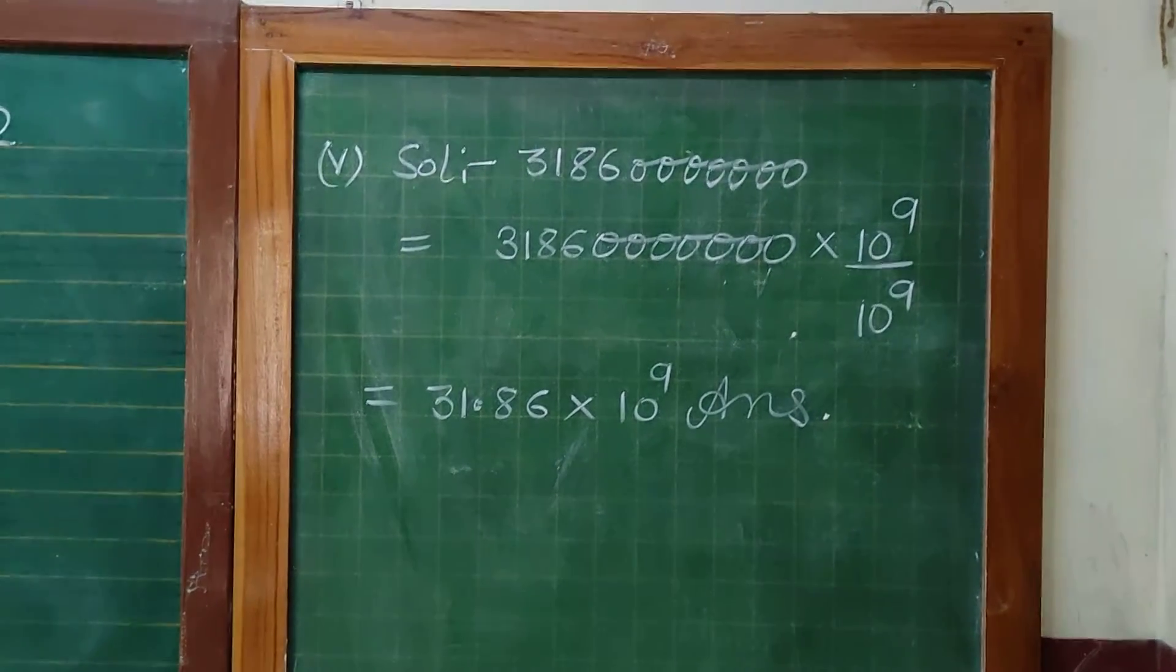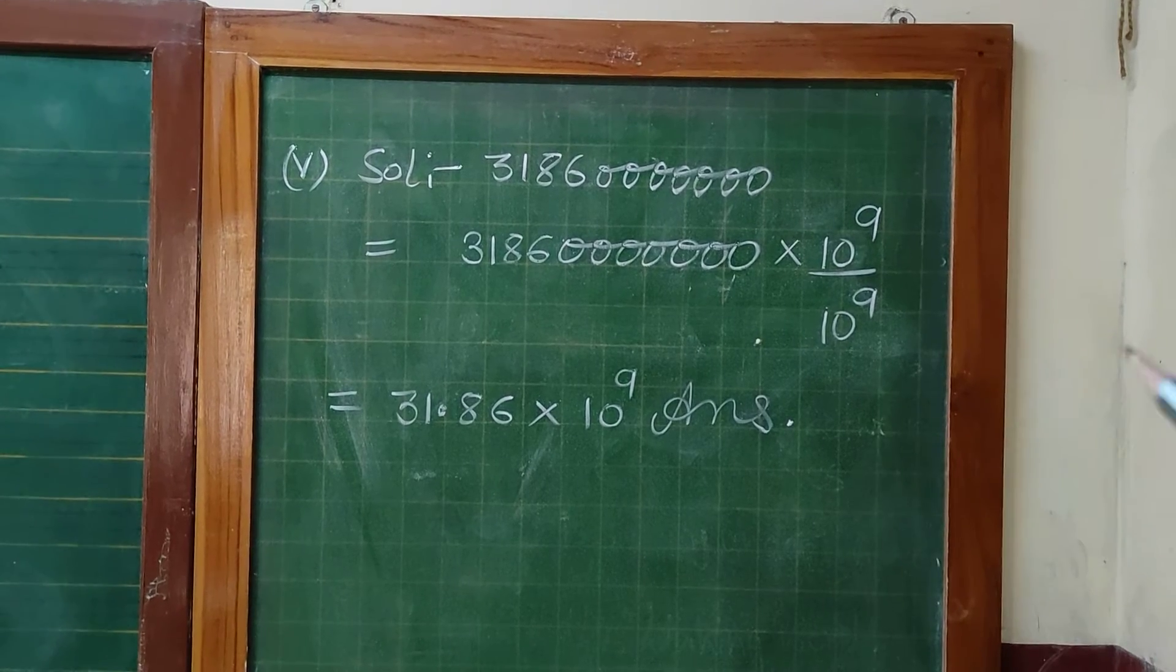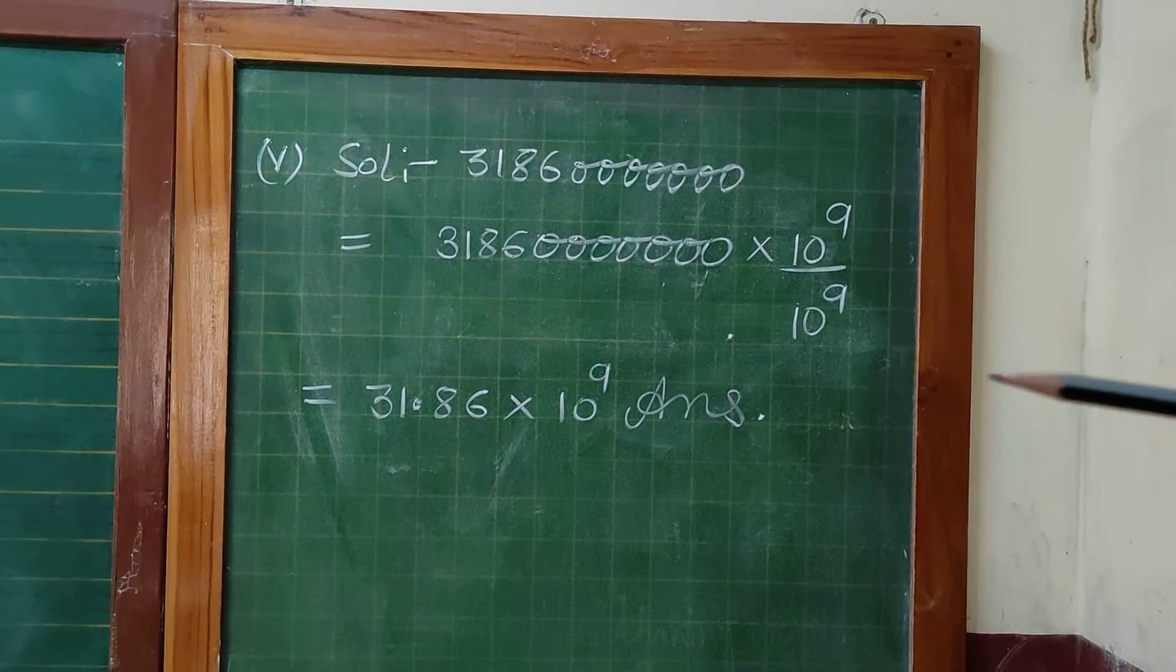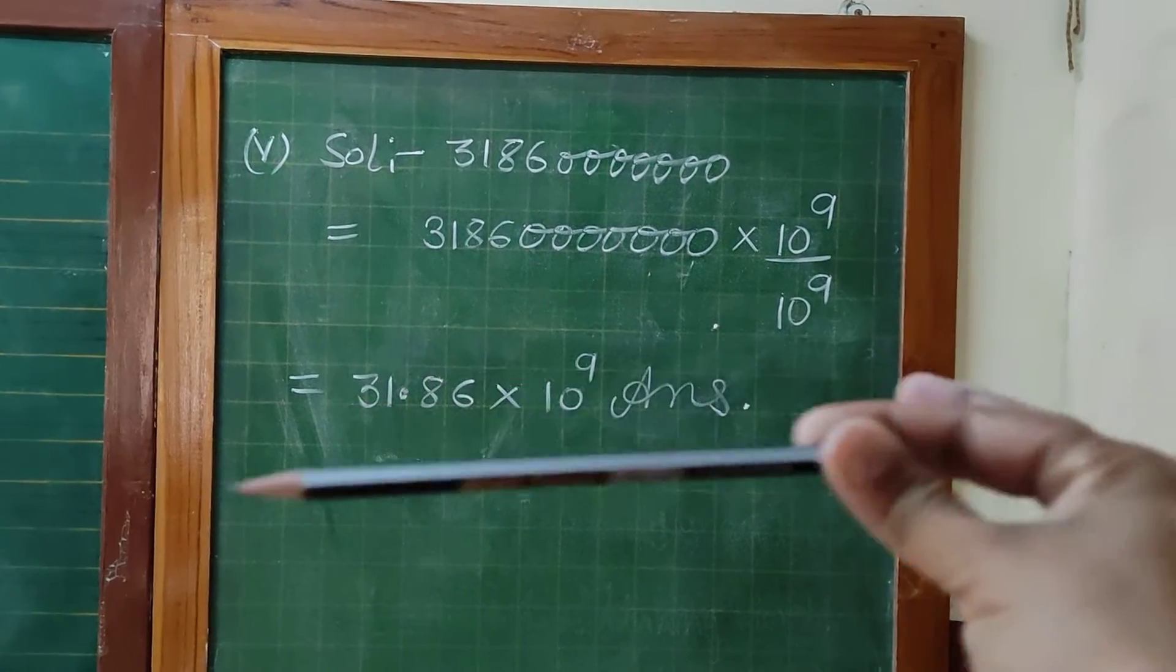Now decimal, suppose the decimal is not here, so we will assume the decimal is here. So we want to send decimal to the left hand side.